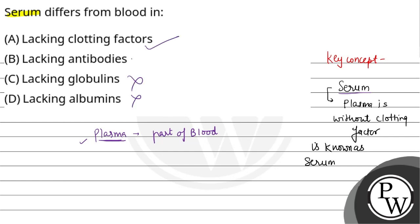Globulin, albumin, antibodies — yahan pe globulin aur albumin present honge. Kyunki plasma mein basically three types of proteins hoti hain: that is globulin, albumin, and fibrinogen. Toh baki sab toh present honge, but what is absent is fibrinogen.